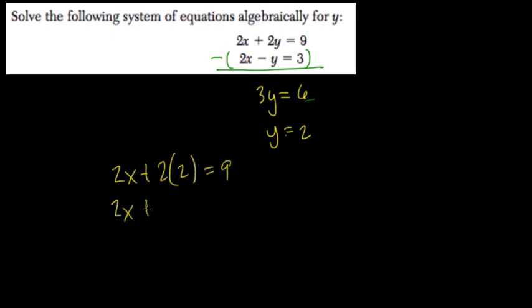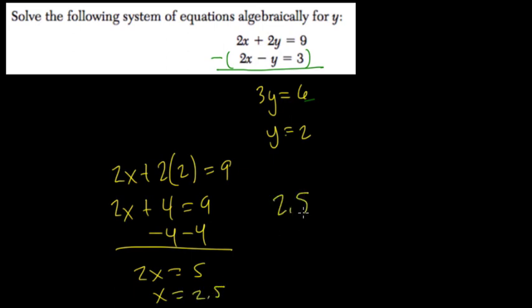So 2x plus 4 equals 9, subtract 4 from both sides, and 2x equals 5, so x equals 2.5. So the answer would be 2.5, 2, right? That's the point that solves both.